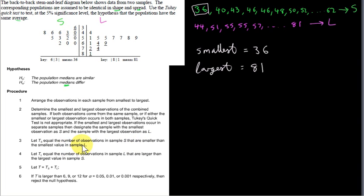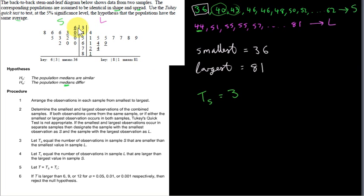The smallest value in sample L is 44. We count the number of observations in sample S that are smaller than 44. Those are 36, 40, and 43 — since 46 is greater than 44, we stop there. So TS equals 3. You can see these three values are underlined in the stem and leaf diagram.